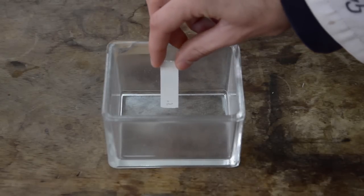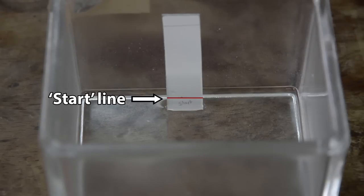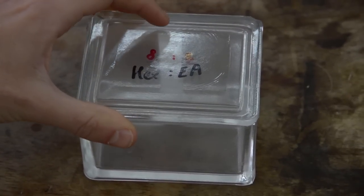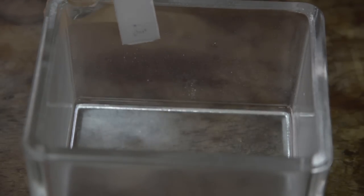Immerse the TLC plate into the solvent jar, ensuring that the height of the solvent is not higher than the start line on the TLC plate, and allow to stand until the solvent front reaches the finish line at the top. Remove the TLC plate and allow to dry using a heat gun if necessary.